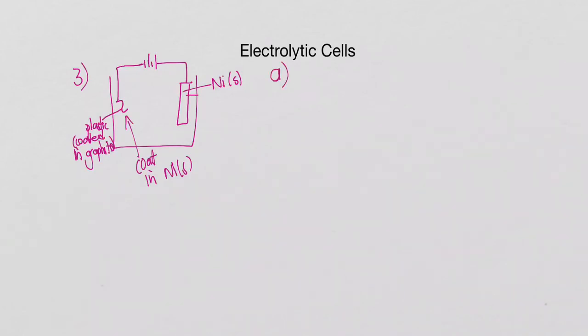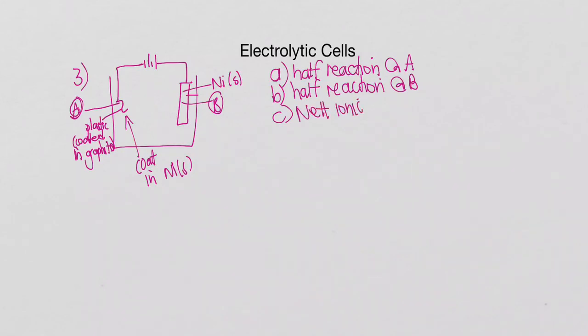A few questions on this. Let's call the plastic A and the nickel B. Question A is write down the half reaction that occurs at A. B is going to be write down the half reaction that occurs at B. And then C is going to be to write down the net ionic equation overall in this entire cell.